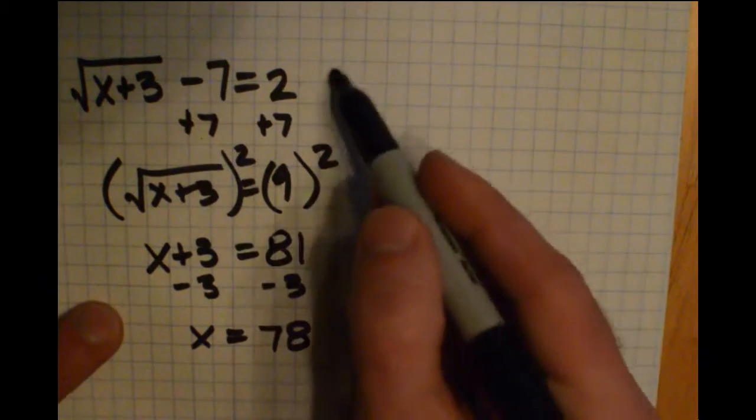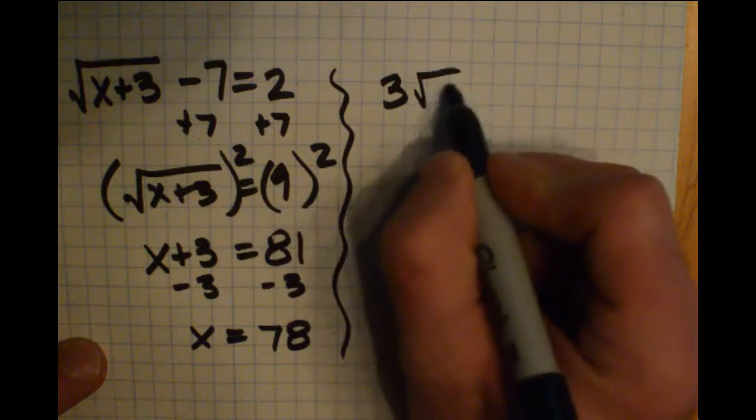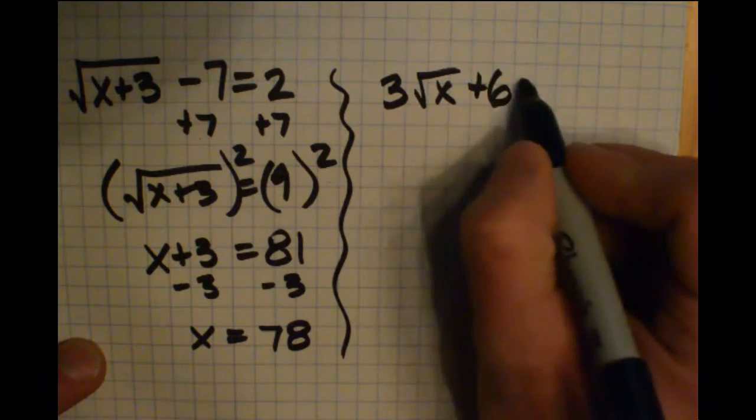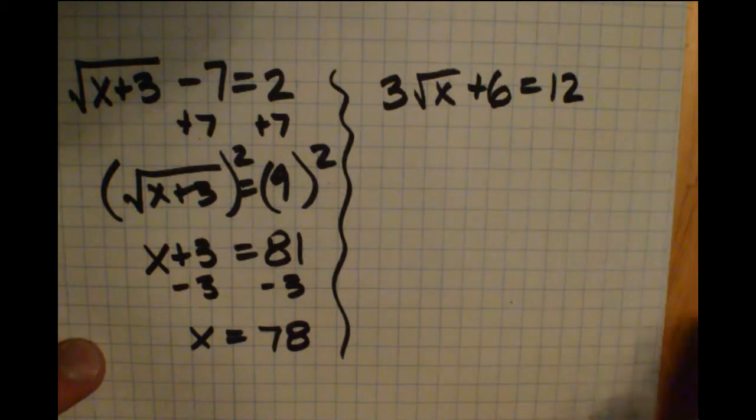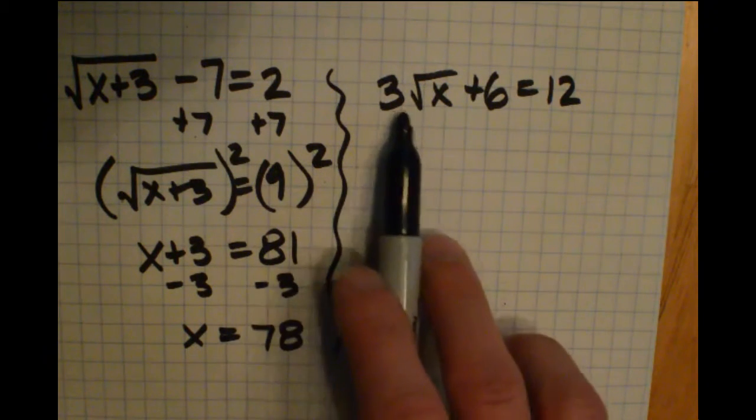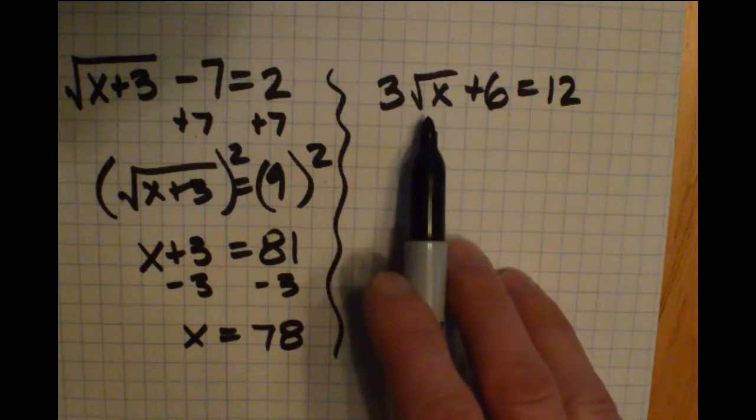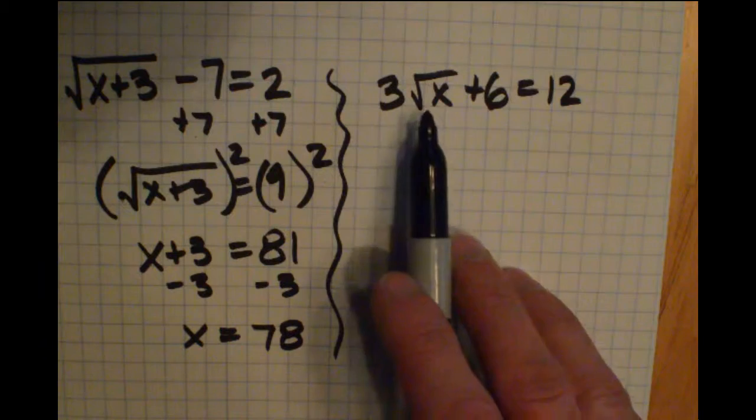Let's take a look at another example. Let's say I have 3 radical x plus 6 equals 12. All right. So the first thing I want to do here is I want to get rid of this 3 that's being multiplied. I want to get rid of that 6 that's being added. I want to get rid of that radical, which is taking the square root.